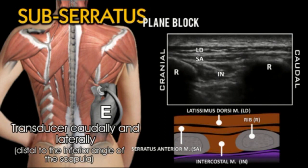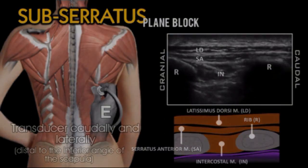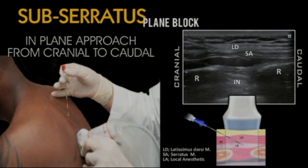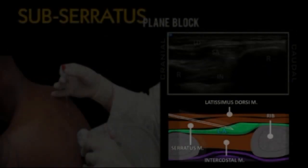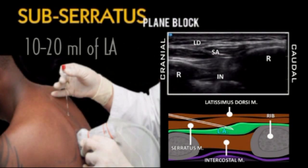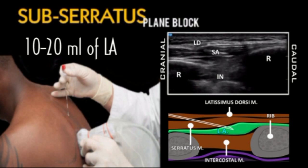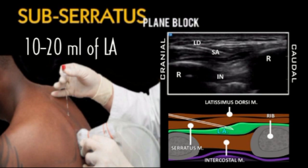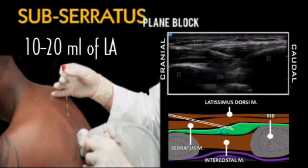Identify the latissimus dorsi, serratus anterior, and intercostal muscles between ribs. Then advance the needle in-plane directed caudally and laterally. Inject 10 to 20 ml of local anesthetic in the tissue plane between the serratus anterior and external intercostal muscle and ribs.